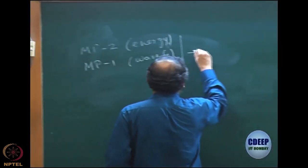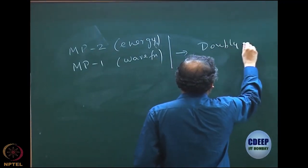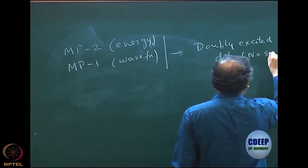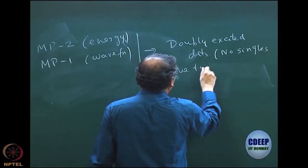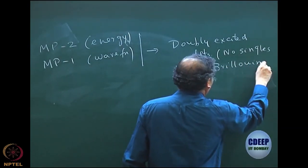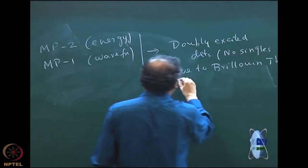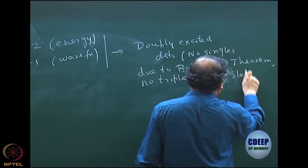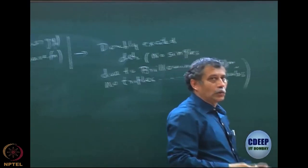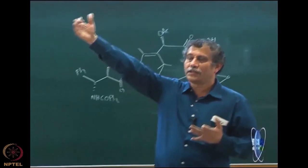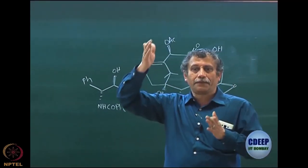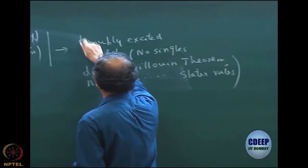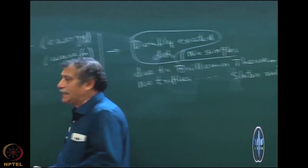When we analyze these two, we see that the contribution comes from only doubly excited determinants. No singles due to Brillouin's theorem, and no triples and so on — quadruples and higher — because of Slater rules. Slater rules do not allow V to connect the Hartree-Fock to triply excited determinants, because we have only one matrix element: Hartree-Fock, V, excited determinant, and back to Hartree-Fock. So only doubly excited determinants contribute.